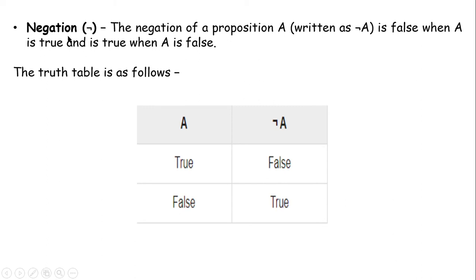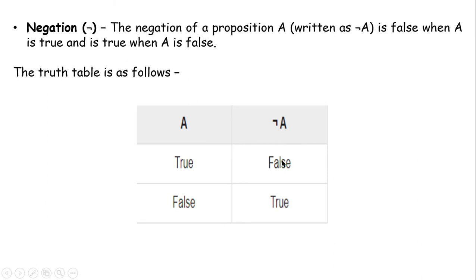Next is the negation operation. The negation of a proposition A is false when A is true, and true when A is false. In other words, the negation of A is always the opposite of A. The negation operation can be done on a single variable — you do not need two variables. So if A is true, negation A is false; if A is false, negation A is true.